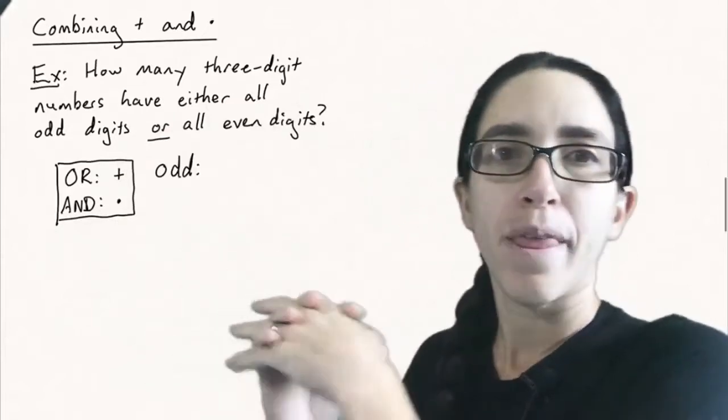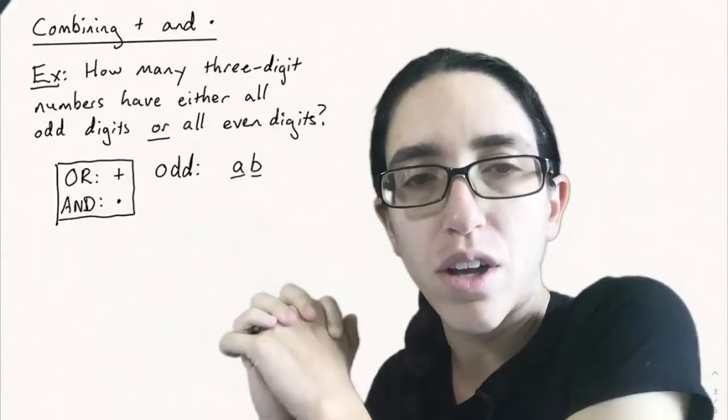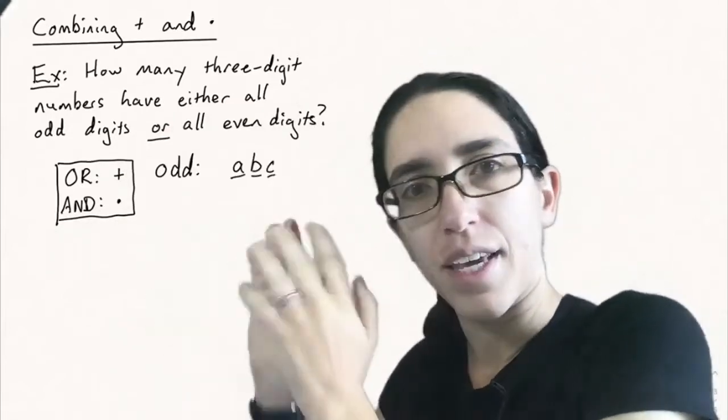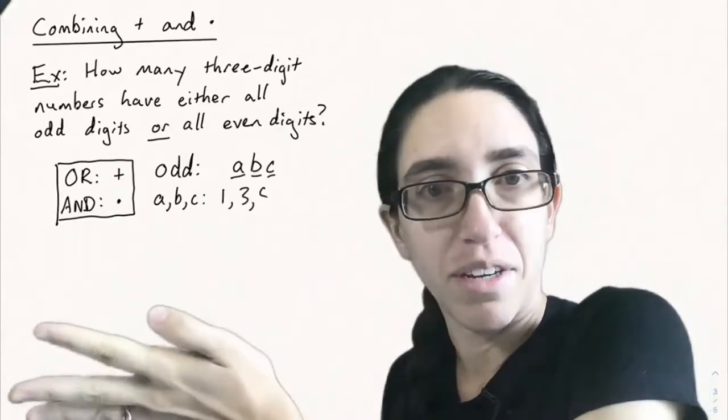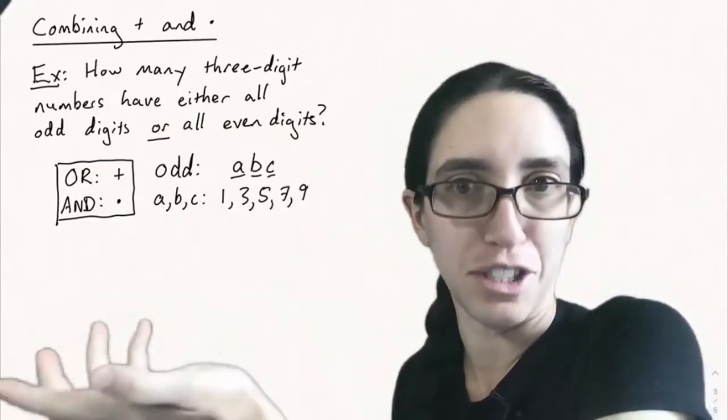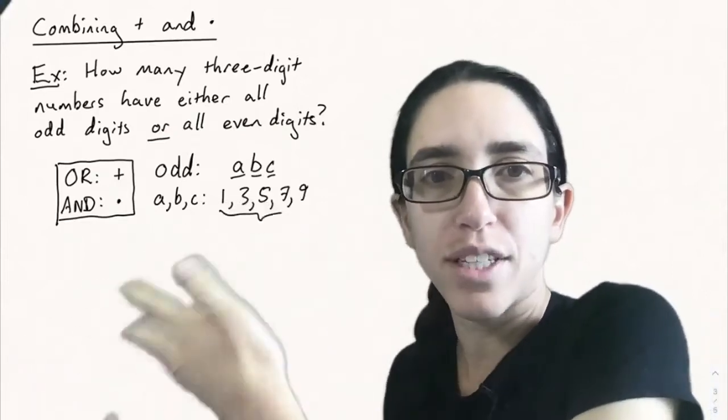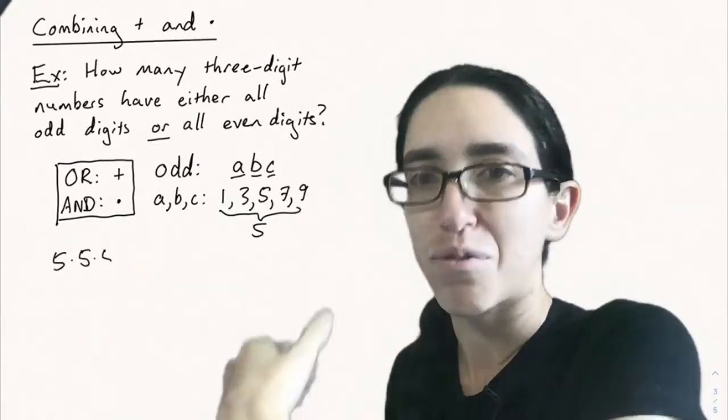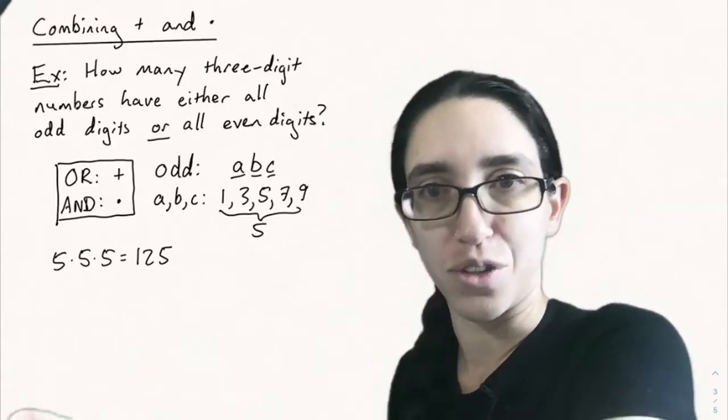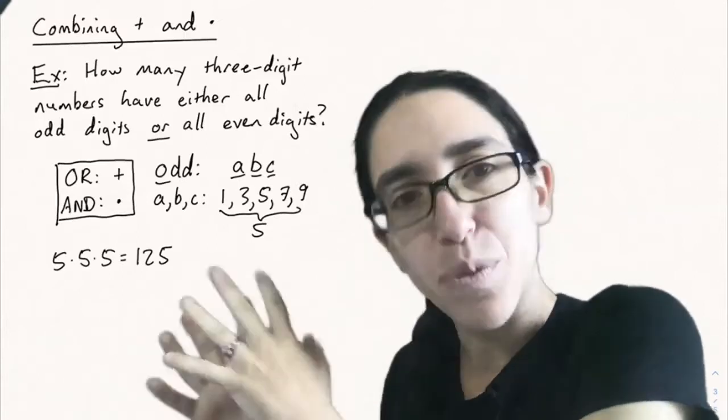So let's split this into the two cases given by the OR, the odd and the even. Starting with the odd. How many three-digit numbers have all odd digits? Well again, thinking of it as A, B, and C. Now A, B, and C can be any odd digit 1, 3, 5, 7, or 9 because none of them are 0. It's all fine. So each of them has five possibilities and now we use the multiplication principle again. 5 times 5 times 5 is 125. So that's one case.